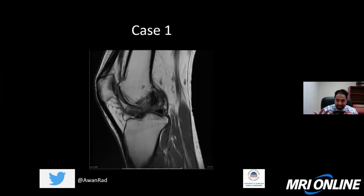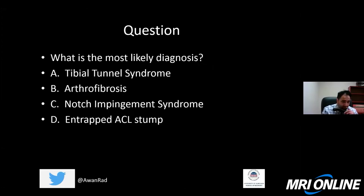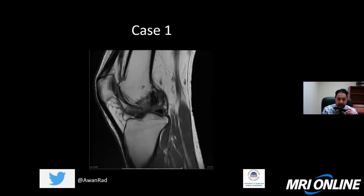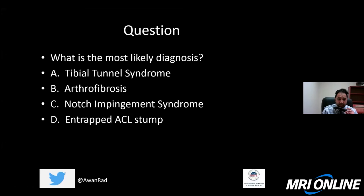I'd like to start all my lectures with certain cases that I show at the beginning and come back to at the end. This is case number one: a sagittal T1-weighted MRI image of a knee in a patient that's had an ACL reconstruction, and there's an abnormality here. The question is: what's the most likely diagnosis? Is it tibial tunnel syndrome, arthrofibrosis, notch impingement syndrome, or an entrapped ACL stump? We'll go over the answers at the very end of the lecture.